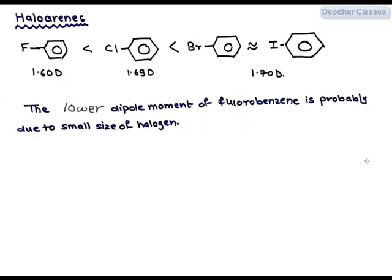And for haloarenes, again the small anomalous case of fluorobenzene is again because of smaller size of fluorine. Bromobenzene and iodobenzene nearly have similar dipole moments. Their value is around 1.70 Debye which is highest in haloarenes, followed by chlorobenzene which has dipole moment of 1.69 Debye. And fluorobenzene has least dipole moment in this category, and it corresponds to 1.60 Debye.